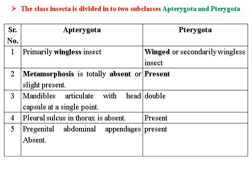Class Insecta is divided into two subclasses: Apterygota and Pterygota, depending on wing development. Apterygota are primary wingless insects, where metamorphosis is totally absent or slightly present. Pterygota are winged or secondary wingless insects, where metamorphosis is present. The mandible articulates with the head capsule at a single point in Apterygota and at a double point in Pterygota. Pleural sulcus is absent in Apterygota but present in Pterygota. Pregenital abdominal appendages are absent in Apterygota but present in Pterygota.